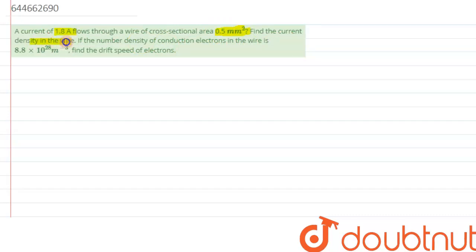We need to find the current density in the wire. If the number density of conduction electrons in the wire is 8.8 × 10²⁸ per meter cube, we need to find the drift speed of electrons.